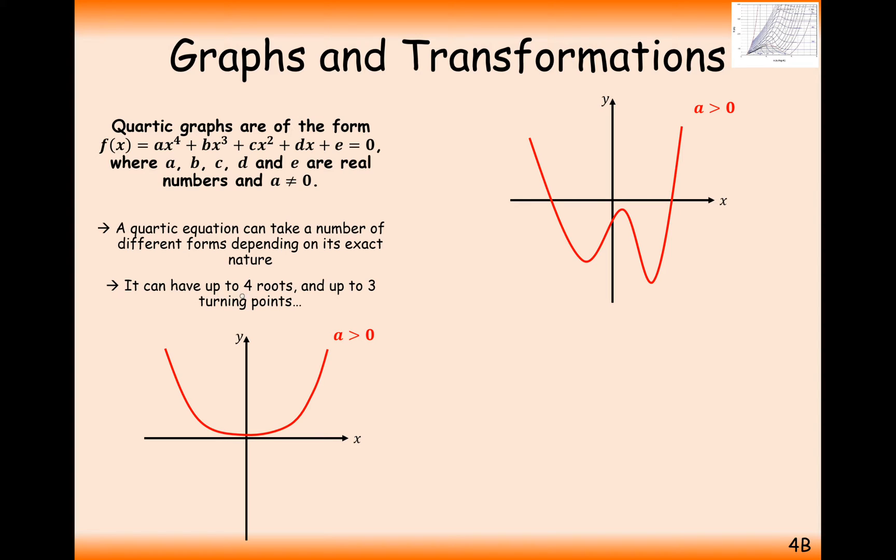So what we're going to get is up to 3 turning points in our graph, so it could look roughly something like this, or when the term in front of the quartic term here is negative, so say minus x to the 4, it could be upside down as well.